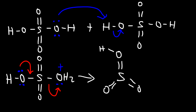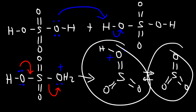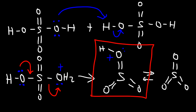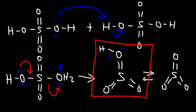The electrophile looks like this — it is the protonated form of sulfur trioxide. If you remove the hydrogen, you get sulfur trioxide (SO₃). You can react either this species or SO₃ with the benzene ring. An electrophile with a positive charge is more electrophilic than a neutral electrophile, so I'm going to use the protonated form in this mechanism. However, you're not wrong if you use SO₃ — in fact, some textbooks use SO₃ as the electrophile, and others use the protonated form of SO₃.